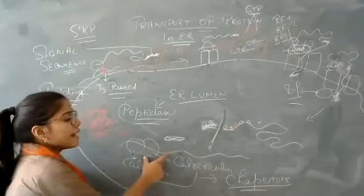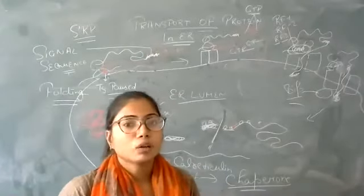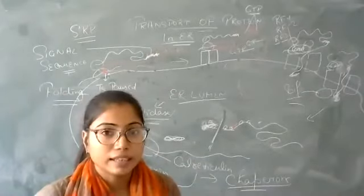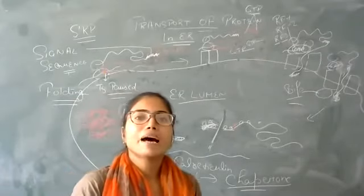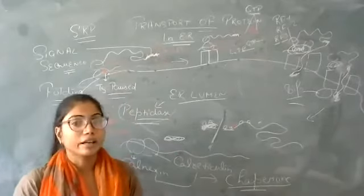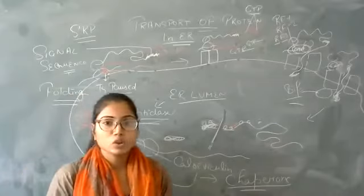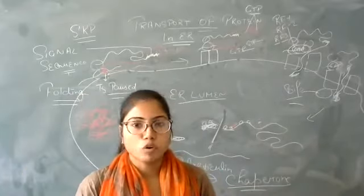In the ER lumen, chaperone proteins bind to the protein. Chaperone proteins are responsible for protein folding. There are four types of protein structures: primary, secondary, tertiary, and quaternary. The tertiary structure represents the protein's folding.